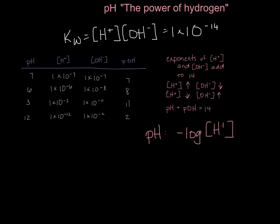Remember, this is really easy to put into your calculator — you literally hit negative, then the log button, and whatever your hydrogen ion concentration is, close parentheses, and enter. Alternatively, your pOH is equal to the negative log of your OH⁻, your hydroxide ion concentration.